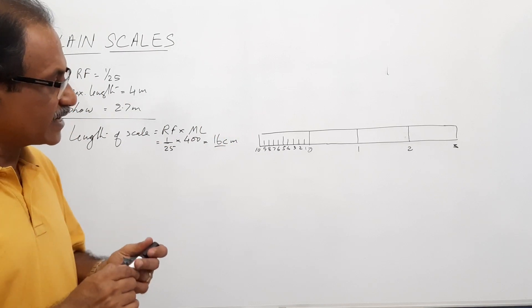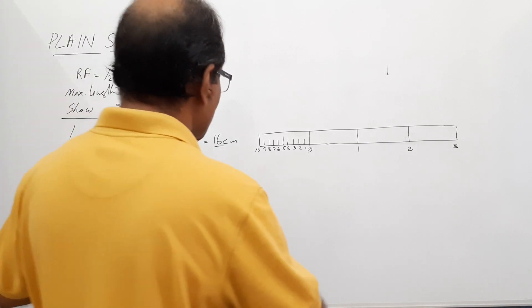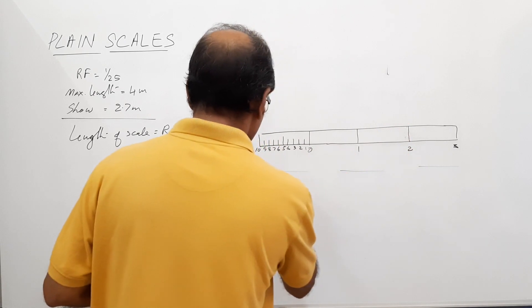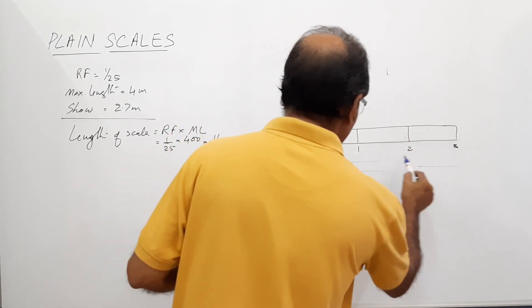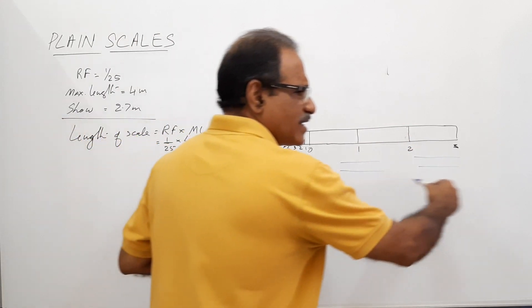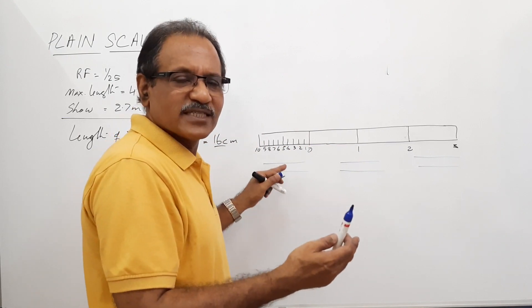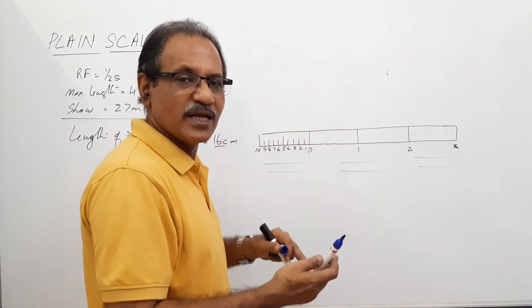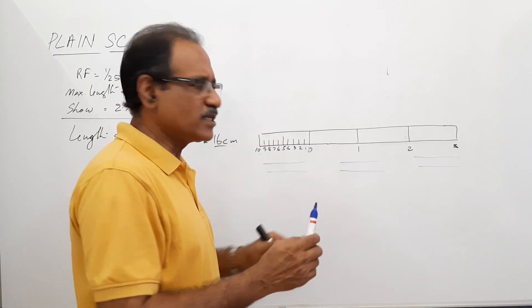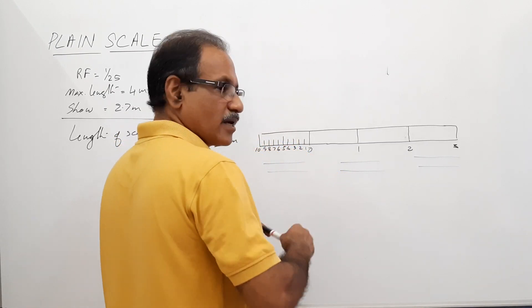Construction of the scale is over. Now you have to mark certain things — the unit, the RF, and the unit label. Draw very light lines in the same level, about 5 millimeters apart for the header area, and write the RF at the center. The RF is 1 by 25.